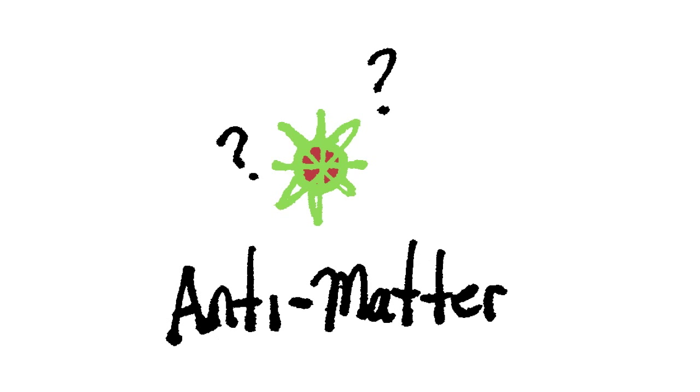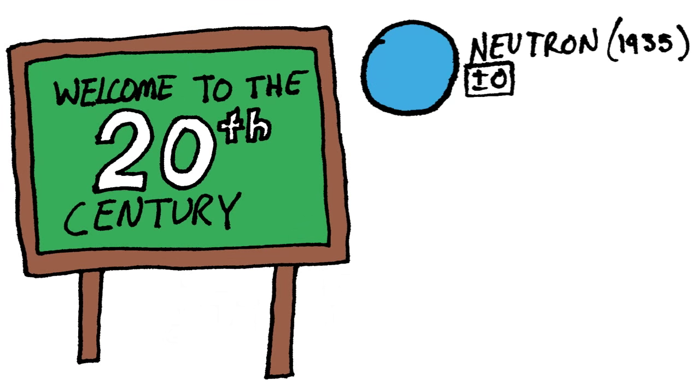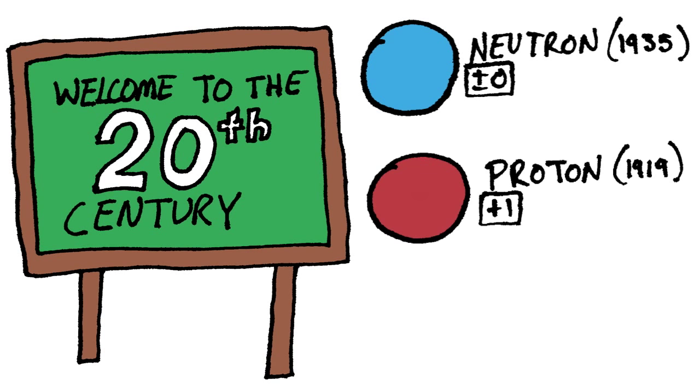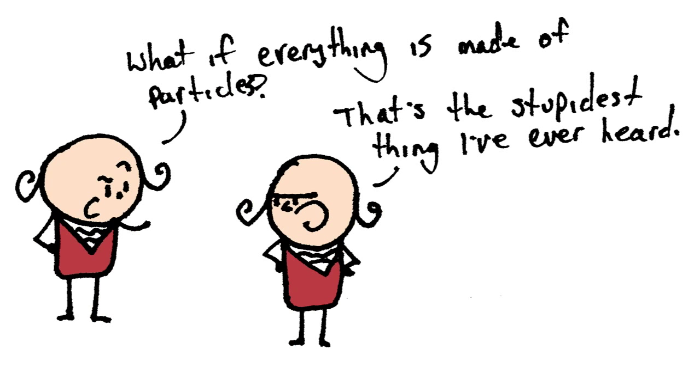First, a historical disclaimer. We've only had a firm grasp on what matter is made of since the beginning of the 20th century. The neutron was discovered in 1935, the proton in 1919, and the electron in 1897. Before that, we only had the idea that maybe matter was made of atoms.